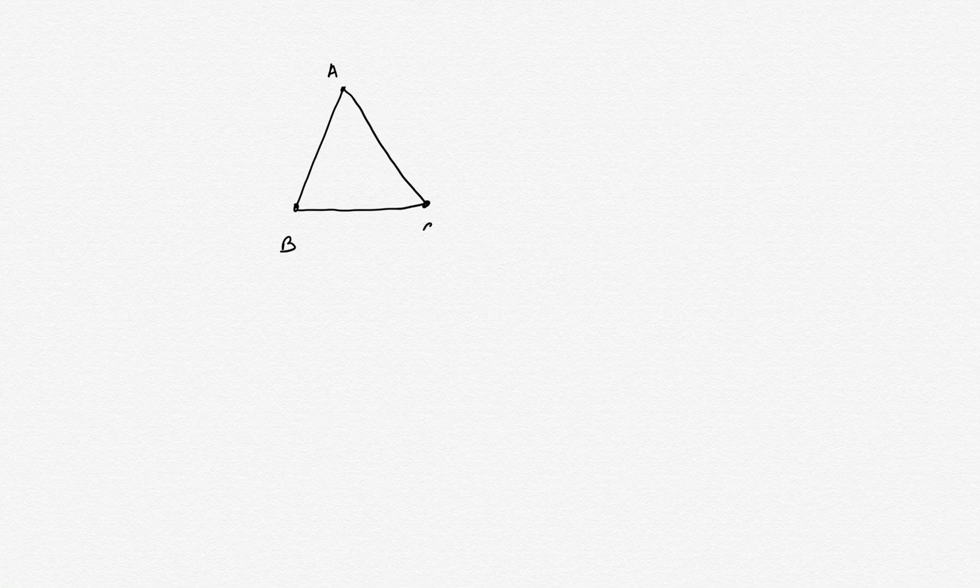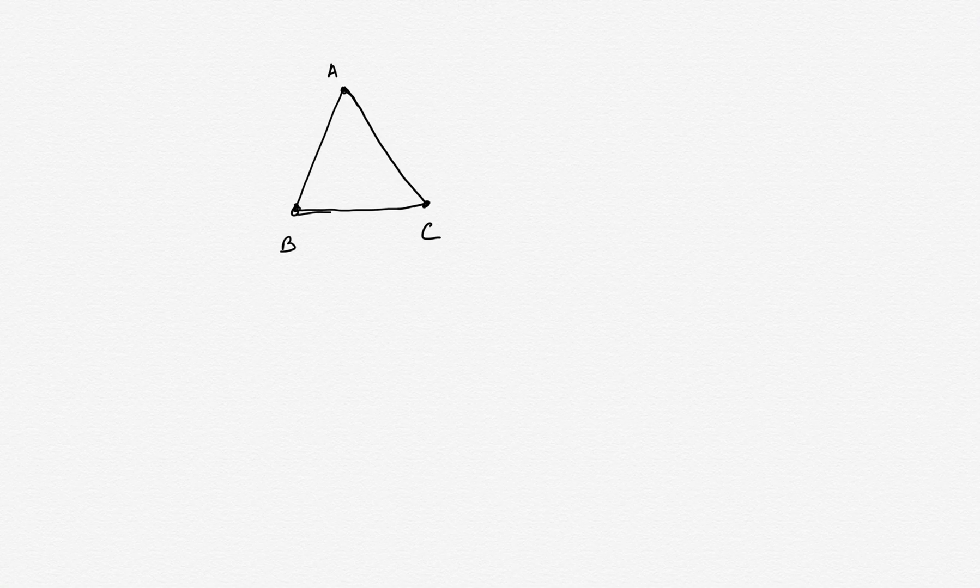Suppose we have a triangle ABC. We know nothing particular about this triangle except that it could be scalene, equilateral, isosceles, anything.